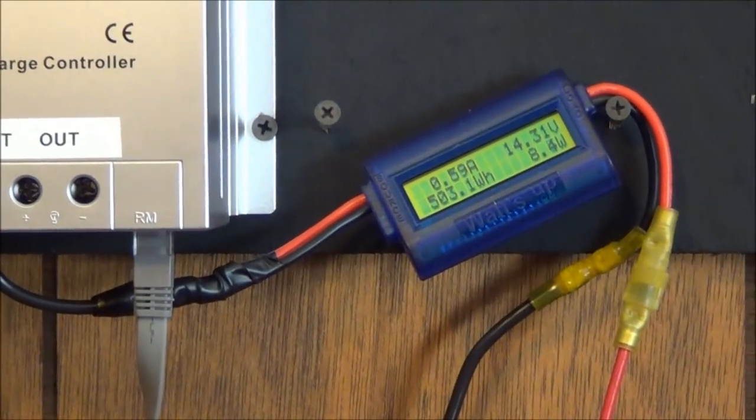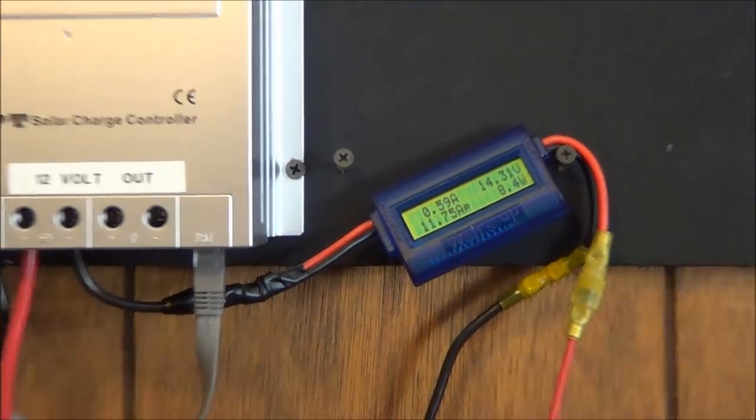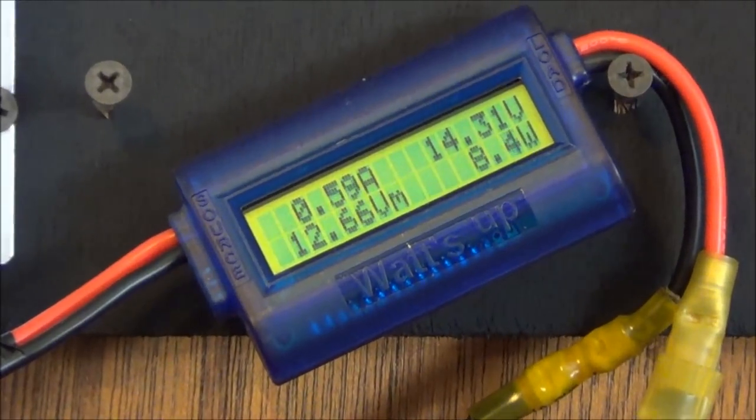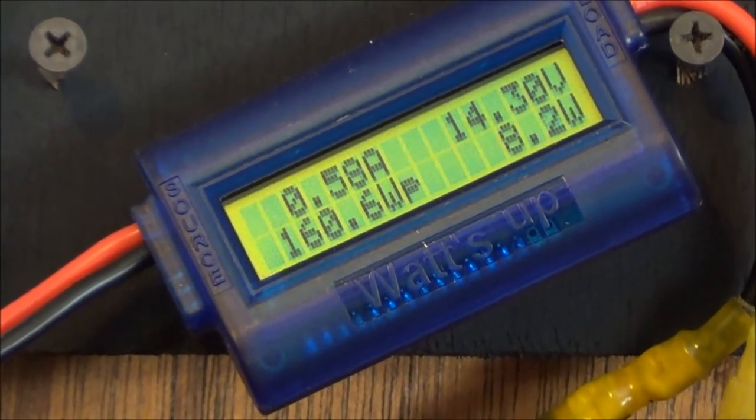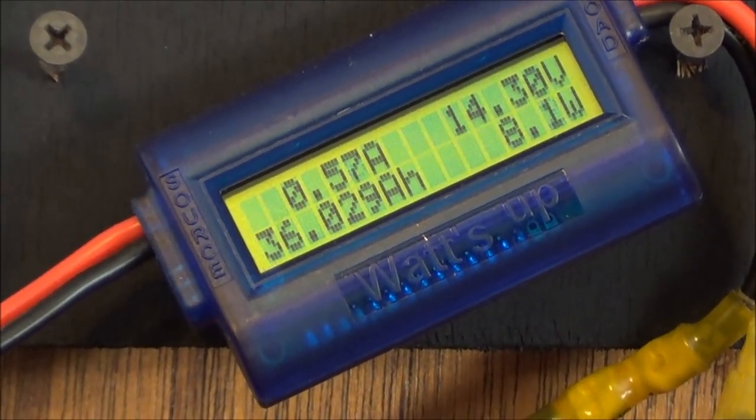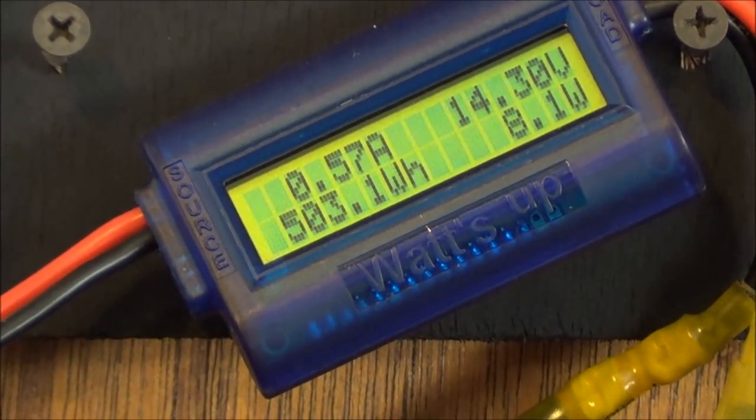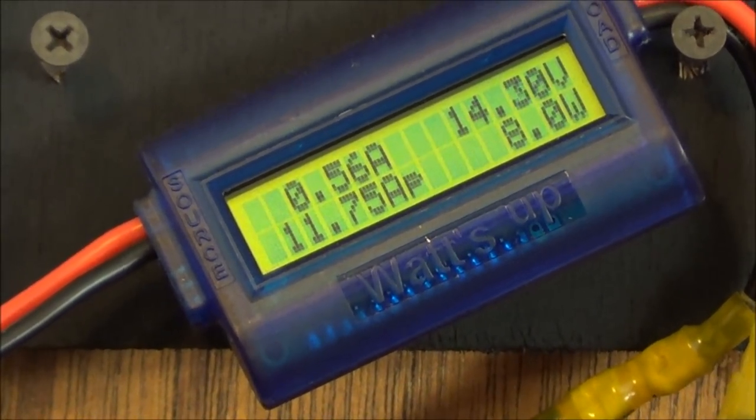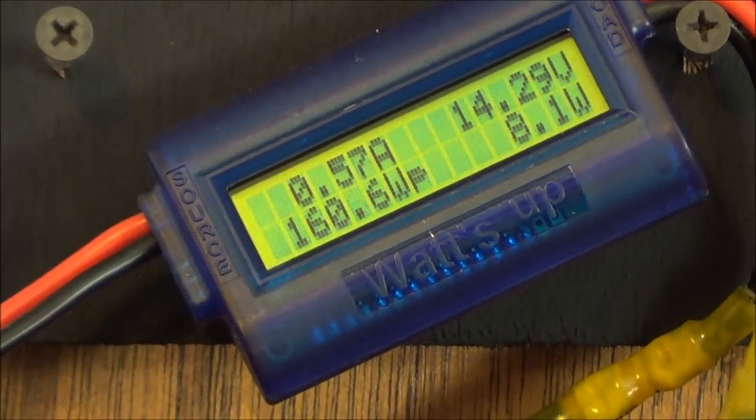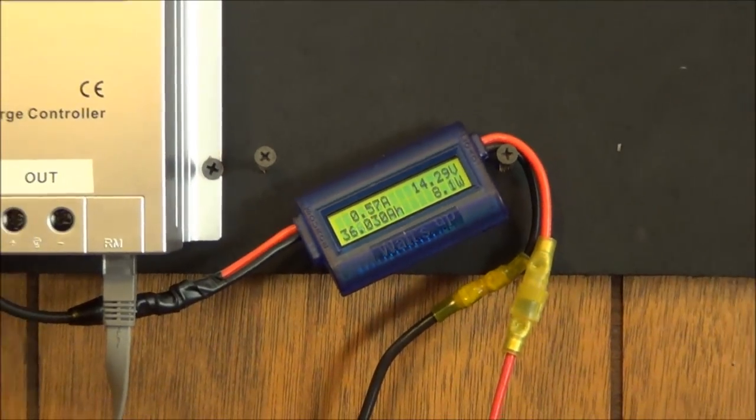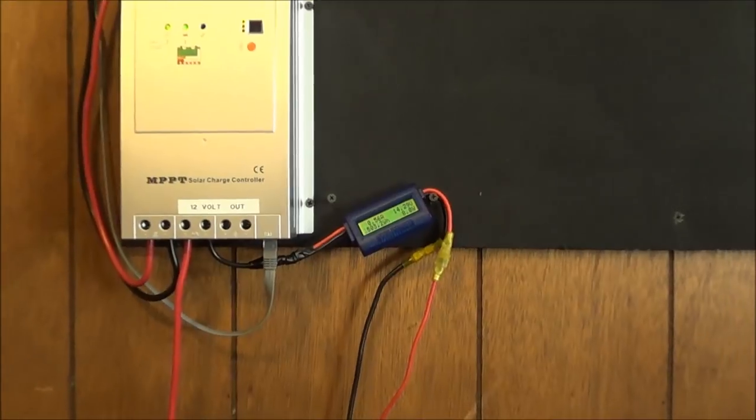Got a little watt meter so I can zoom in on that. Right now the batteries are charged. It's just keeping a little half amp trickle charge in there. About 8.1 watts. It's a little overcast but right now we get some sunny sporadic sun coming through.